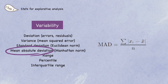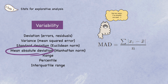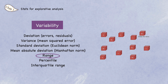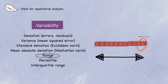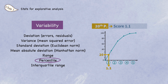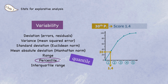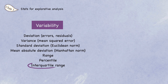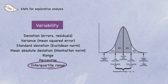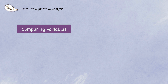Mean absolute deviation, or the Manhattan norm, is the mean of the absolute values of the deviations from the mean. The range is simply the difference between the largest and the smallest value in the data. Percentile is the value such that b percent of the values take on this value or less, and 100 minus b percent take on this value or more. This is identical to a quantile, except quantiles use fractions — for example, 0.8 instead of 80 percent. This leads to another statistic: the interquartile range, which is the difference between the 75th and the 25th percentile.